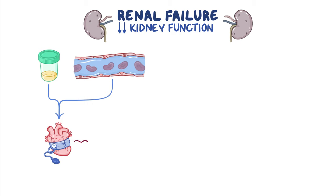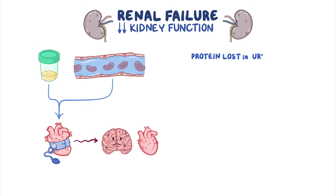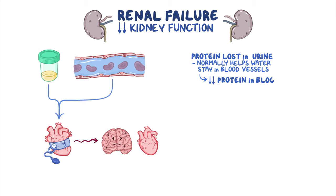In addition, the protein lost in the urine normally helps water stay in the blood vessels. With less protein in the blood, water starts moving out of the blood vessels and into the tissues, causing puffiness or edema, mainly in the face and the legs.